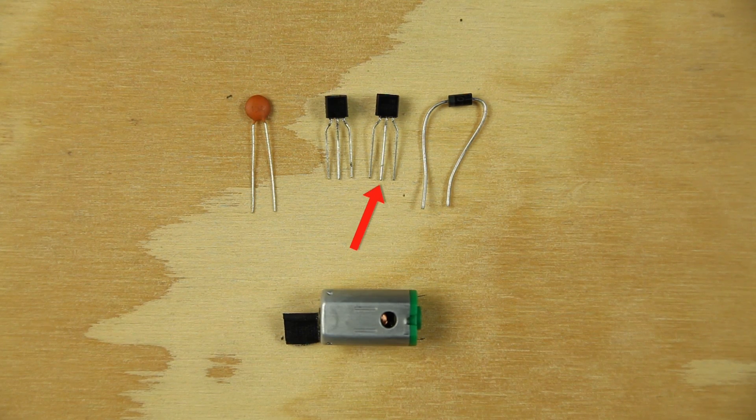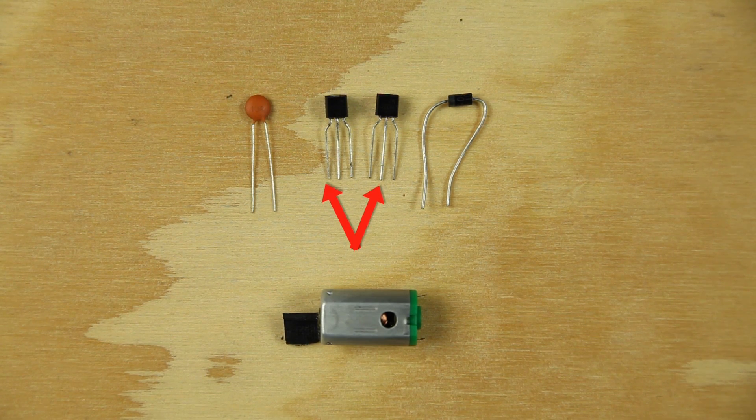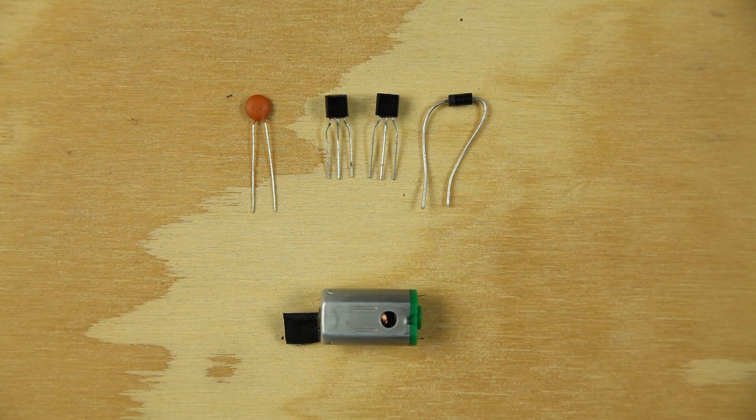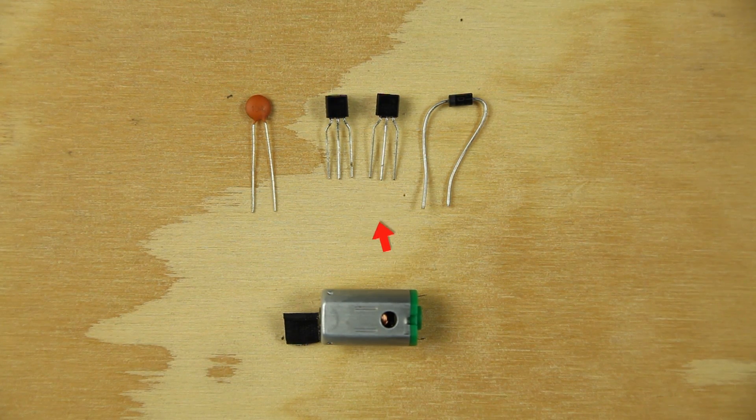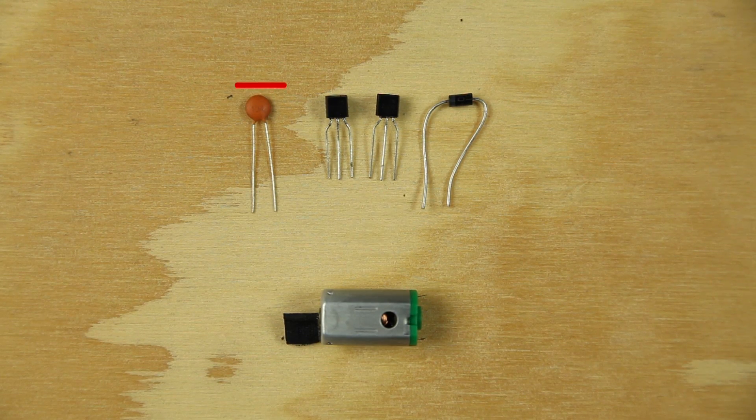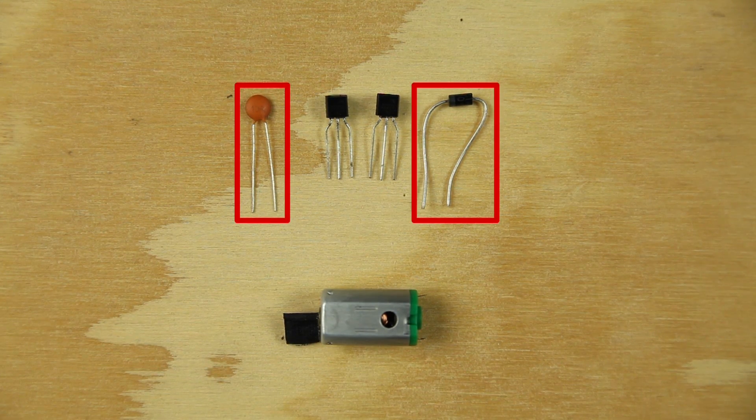Connect the second transistor's middle pin to the motor transistor's left pin. Connect the motor transistor's middle pin to pin 19 of the Launchpad and connect the second transistor's left pin to ground and right pin to the right pin of the motor transistor. To finish the pair, use a capacitor and diode to prevent flyback.